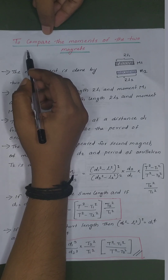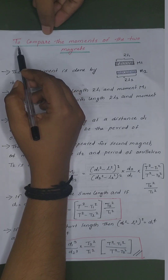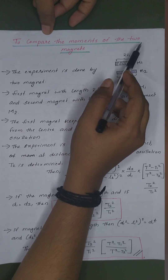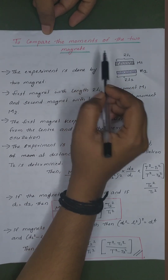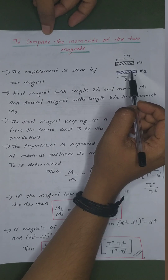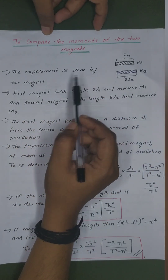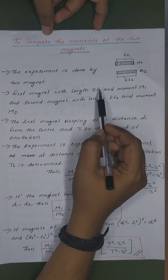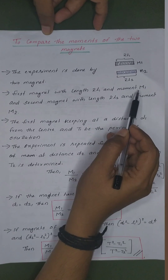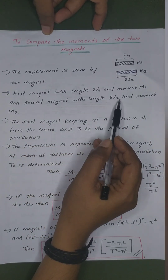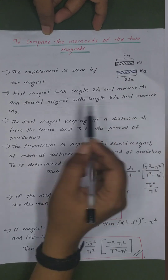Good morning. We are going to discuss the moments of two magnets and compare them. The experiment is done using two magnets: the first magnet with length 2L1 and moment M1, and the second magnet with length 2L2 and moment M2.